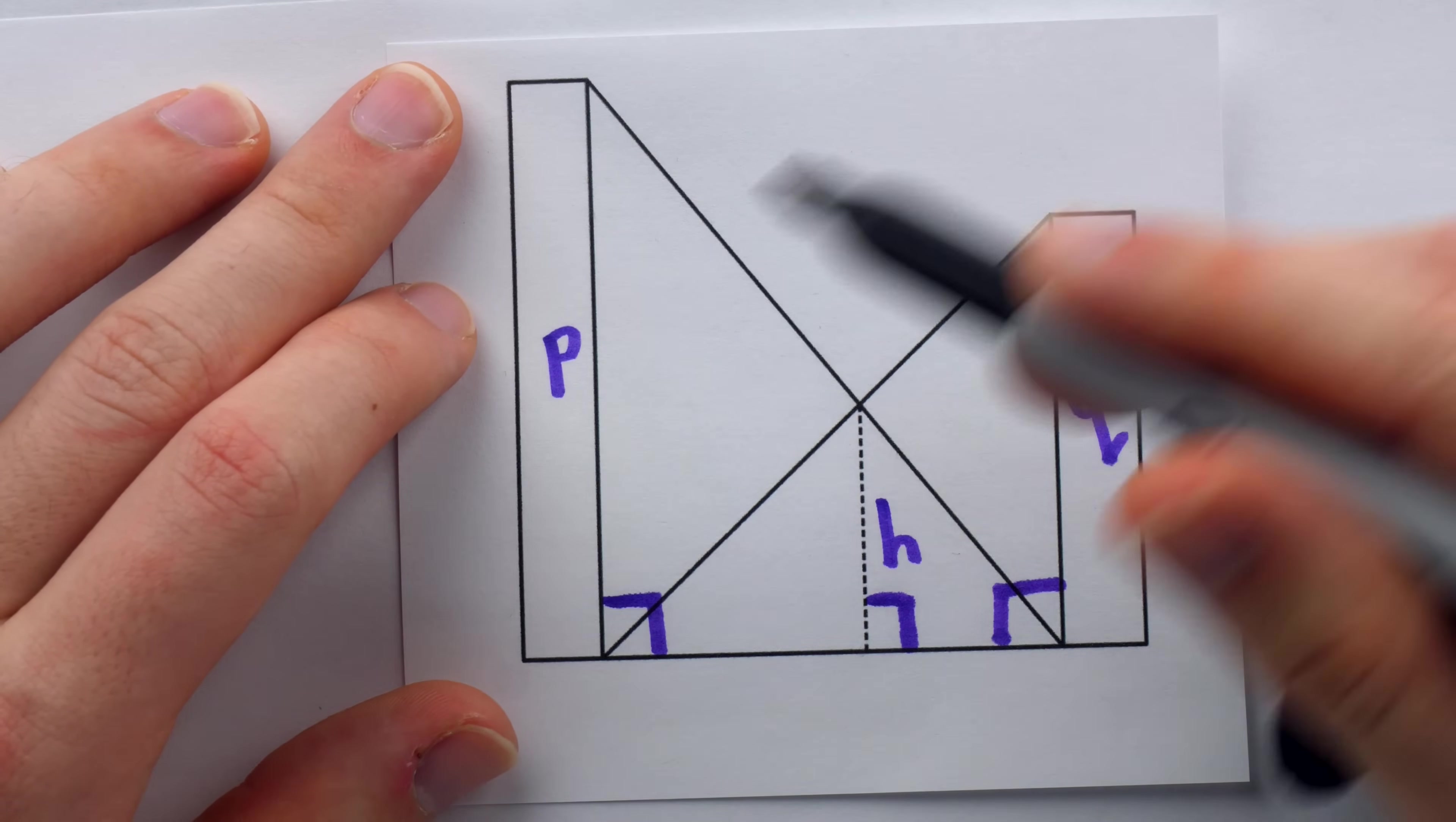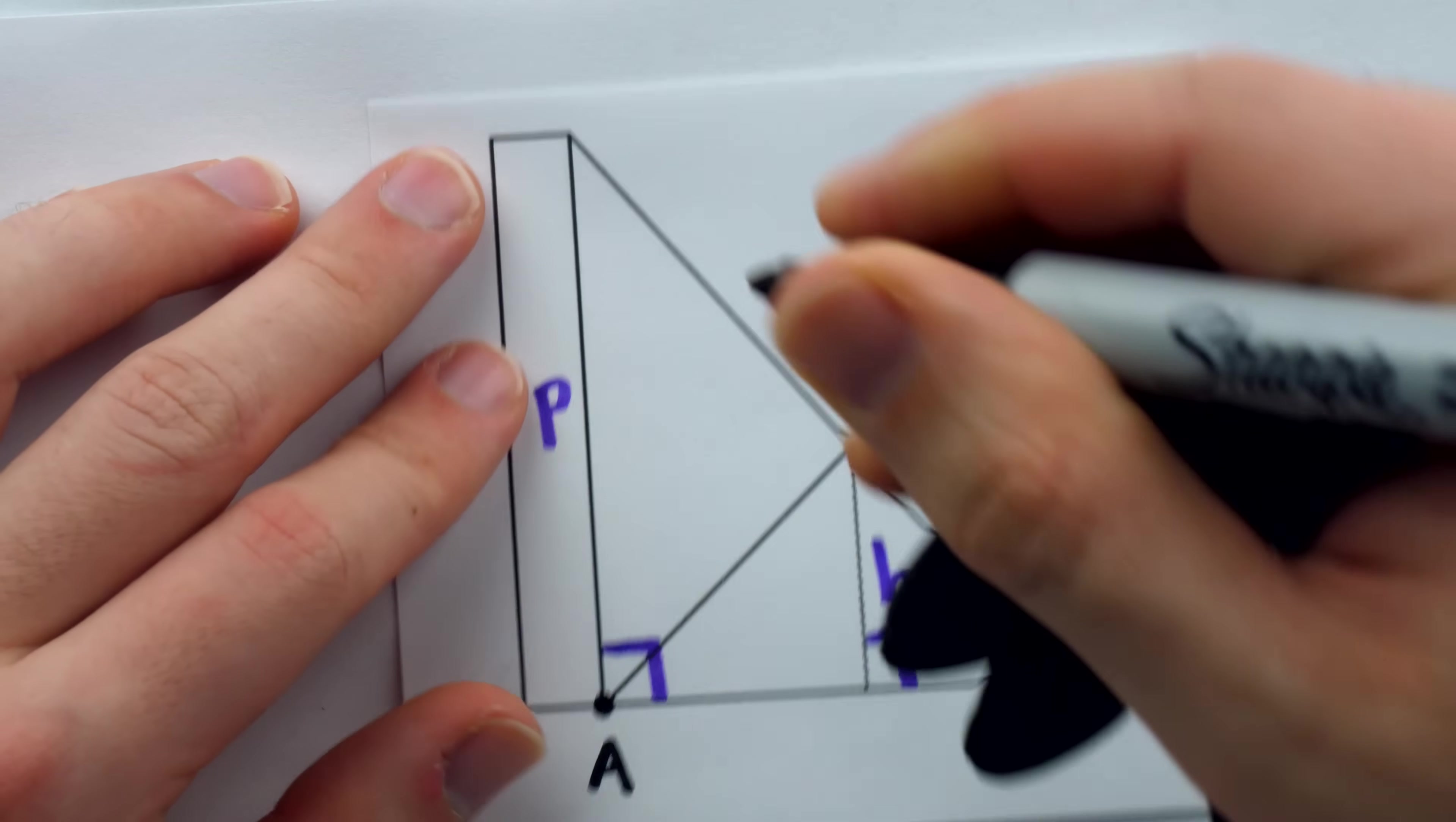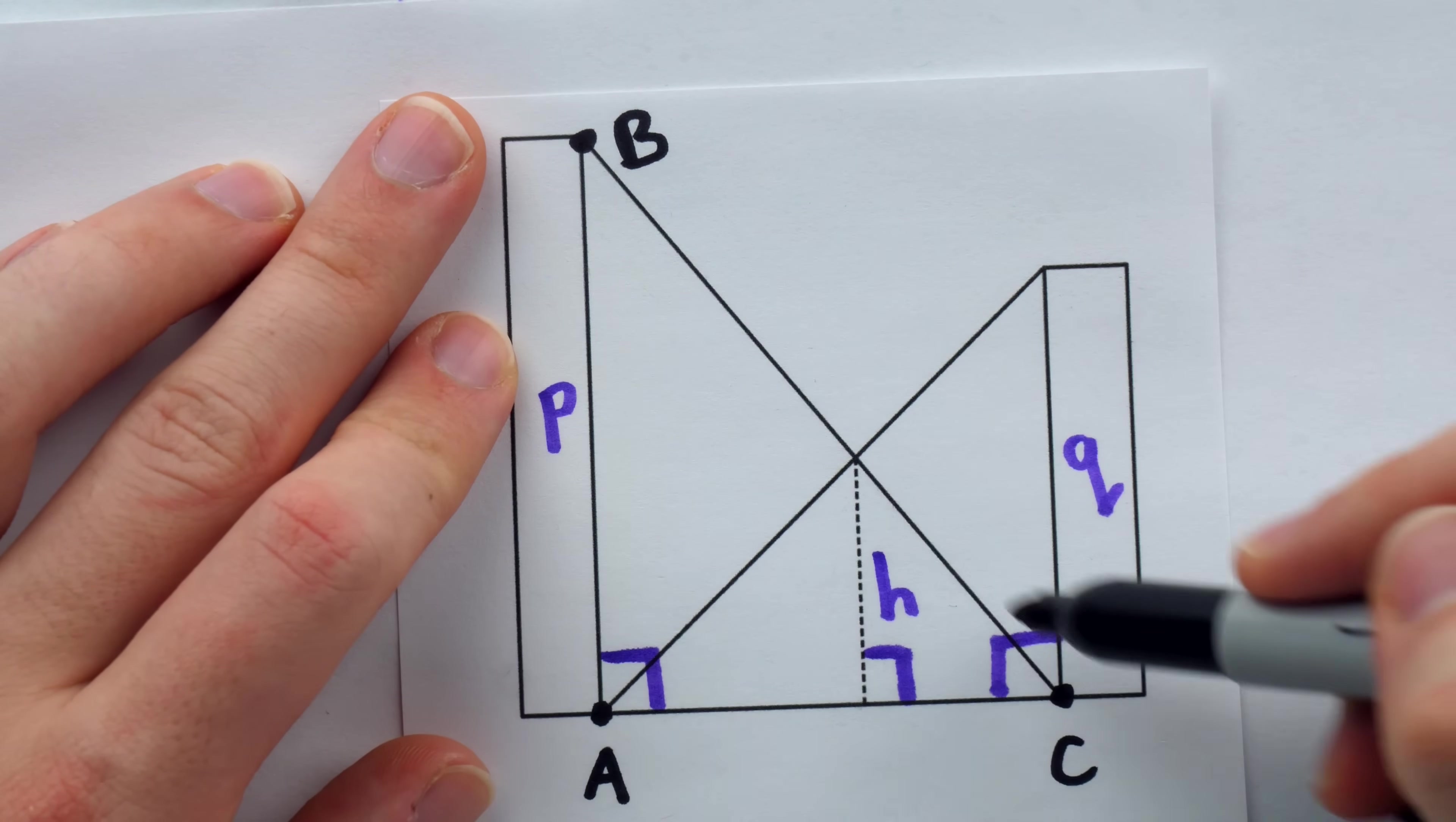Let's get into the solution. There are some important triangles in this picture, and to help describe the solution, it will be useful to label the vertices. So we will call this point A, we will call this point B, and this point over here, C. This gives us the points of one large triangle, A, B, C.